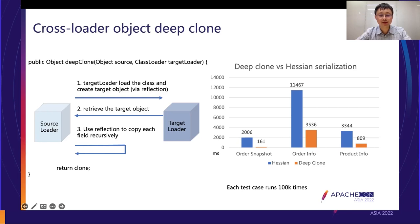We use an object deep clone technique across different class loaders. First we use the target class loader to load the class and create the target object using reflection, since the two class loaders are different and we cannot directly create an instance. Then we use reflection to recursively copy each field of the object. We compared the deep clone approach with serialization using Hessian, and found that deep clone only costs 15% of the response time — much, much faster.